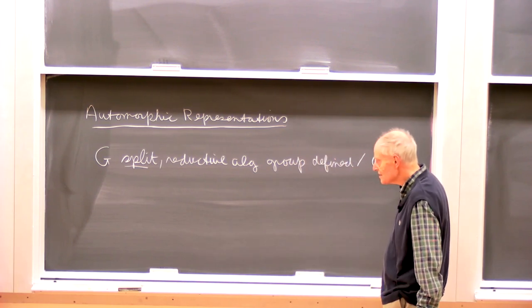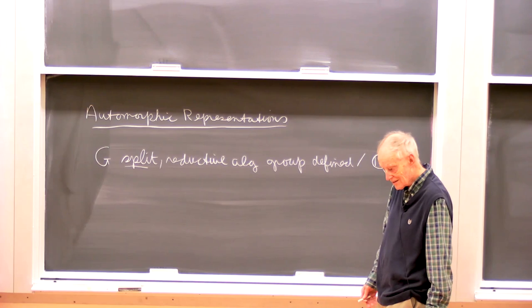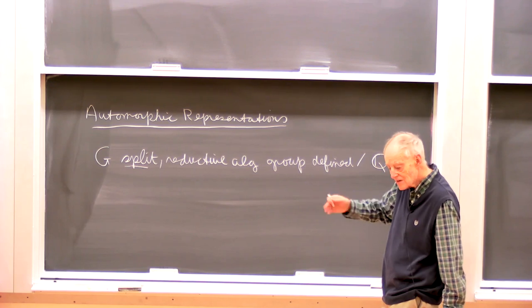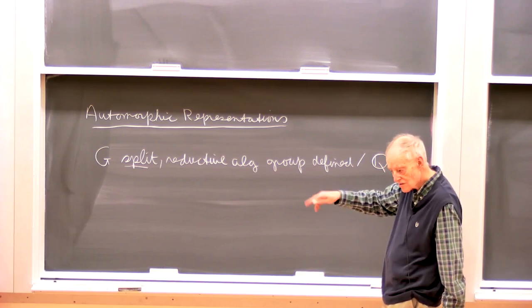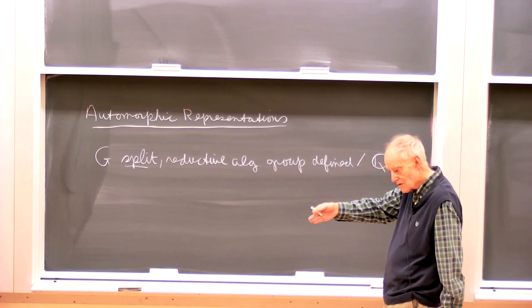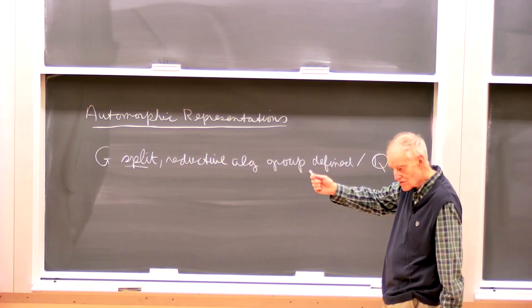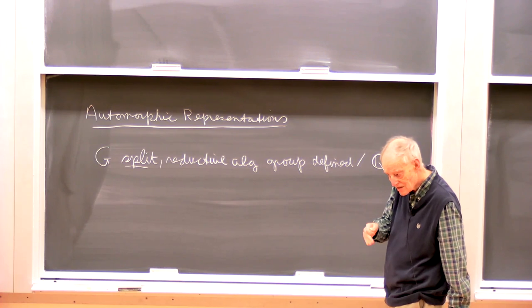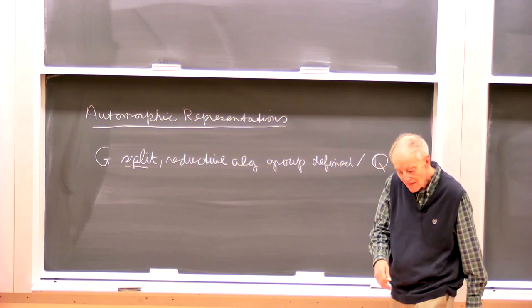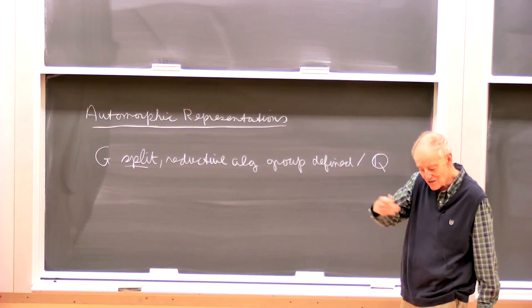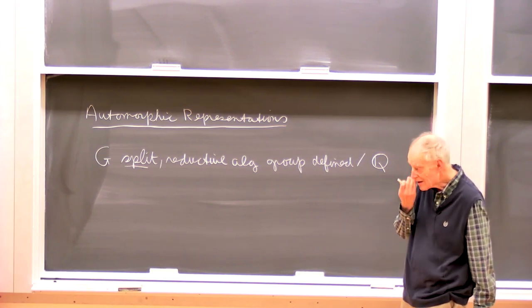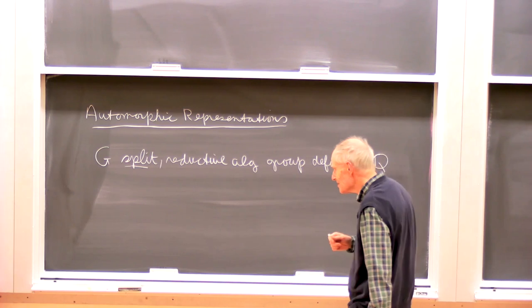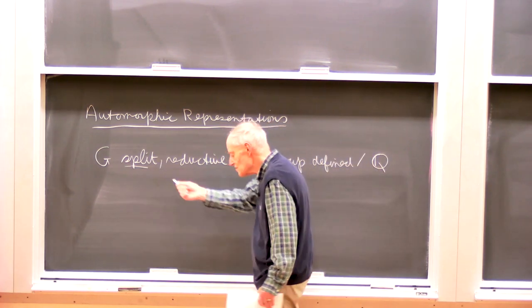A compact Lie group, like a unitary group, is not split because it doesn't have a maximal torus that is split. Split means it has a maximal torus — a maximal abelian subgroup — which is split. A maximal torus is just a product of GL1s or GMs. Split is the opposite of being compact; it's as maximally non-compact as possible. These split groups are important to work with because everything happens perhaps in its simplest form for these split groups.